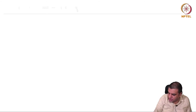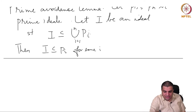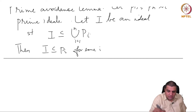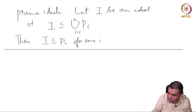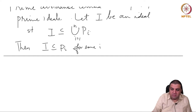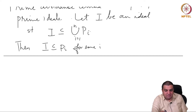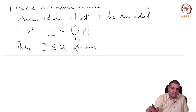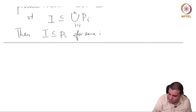This is not the most general version of this lemma — one can relax these conditions, and I will put those as exercises. This is the version we would need to use. Why is it called prime avoidance? The contrapositive statement is: if I avoids each of the Pᵢ, meaning I is not a subset of any Pᵢ, then I is not a subset of the union. That is why it is called the prime avoidance lemma.